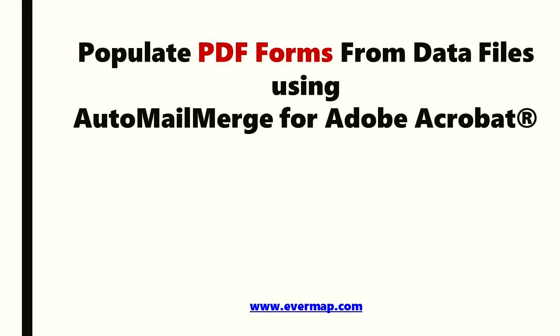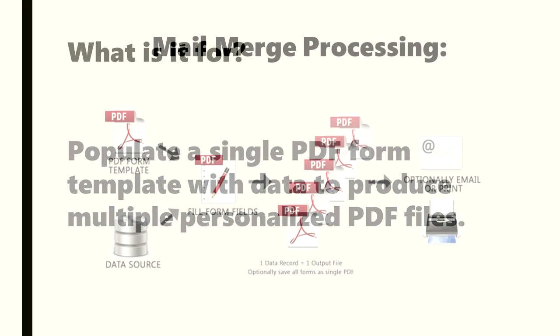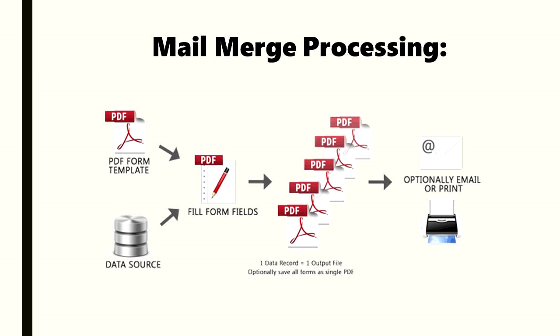This video demonstrates how to populate PDF forms from data files using AutoMail Merge for Adobe Acrobat. Use AutoMail Merge to populate a single PDF form template with data to produce multiple personalized PDF documents. Begin with a template PDF form and a data source file. The data is used to fill the template form, generating one PDF document for every data record.